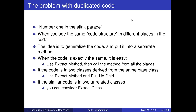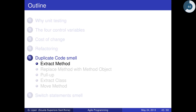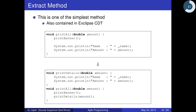Now we are going to see a few methods for addressing duplicate code and one method to address the switch statement smell. Why is duplicated code bad? Because if you have to change it, you have to change it everywhere. The best way is to generalize the code and put the common code in a separate method or class. When the code is exactly the same, you use 'Extract Method' and substitute the duplicate code with a call to the new method from all places. If the code is in two classes derived from the same base class, you can use Extract Method and Pull Up Field.